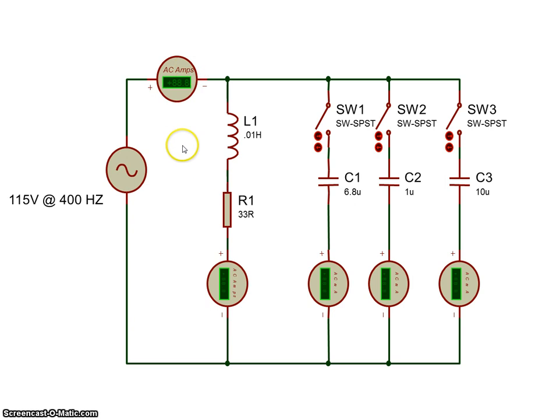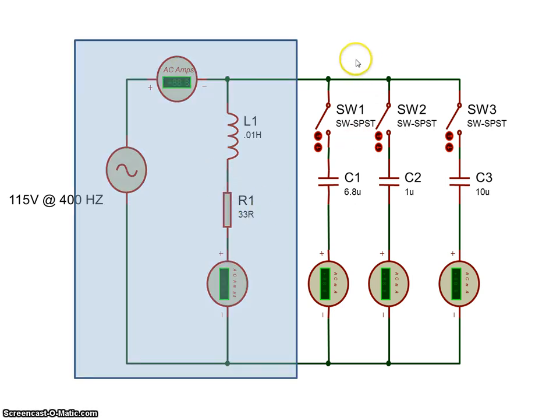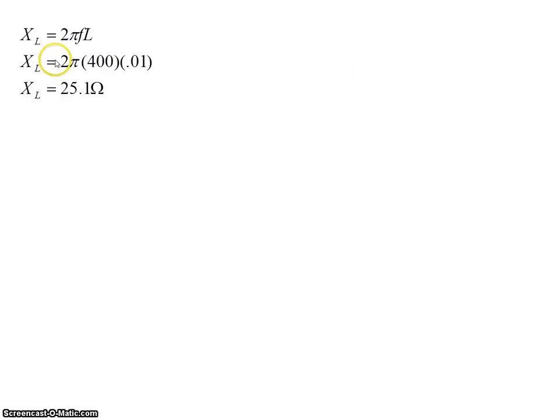So let's consider this part of the circuit first. The coil has a reactance which is 2πfL. In this case the frequency of the signal is 400 Hz as it is in an aircraft, and the inductance was 10 mH. So now the reactance of the coil is 25.1 ohms.